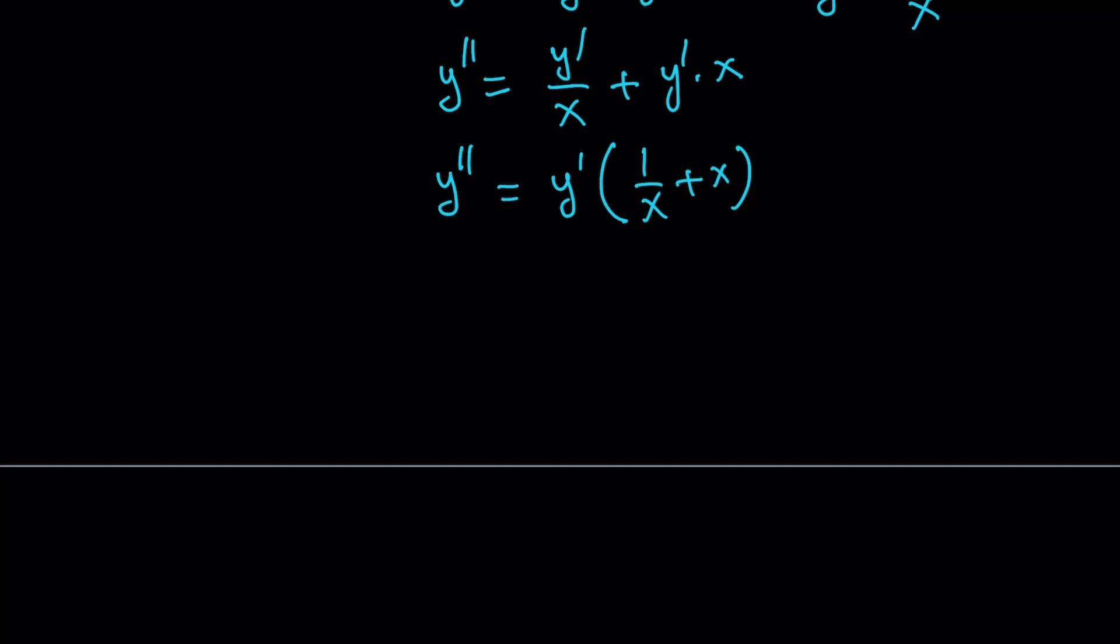Now, here's what we can do. We can divide both sides. And obviously, I'm going to make some assumptions here. You know, y prime does not equal zero, so on and so forth. And I pretty much want everything to be positive because I'm going to be using logarithms. And I don't really want to deal with absolute value. But y double prime divided by y prime can be written as one over x plus x.